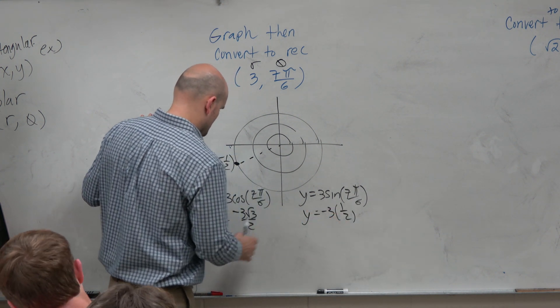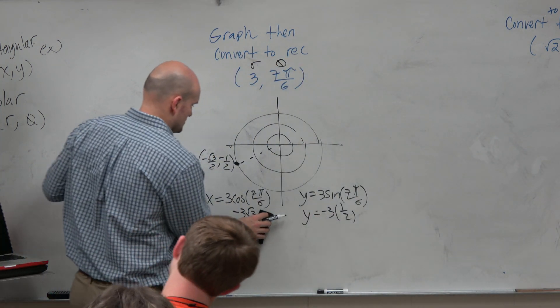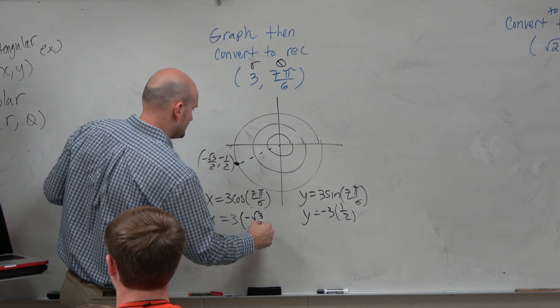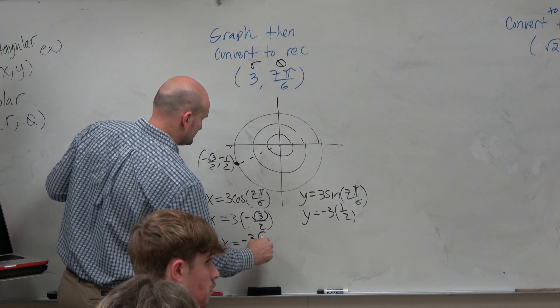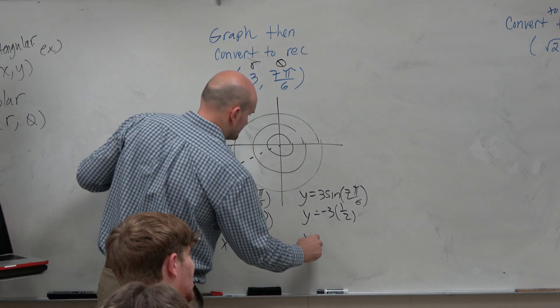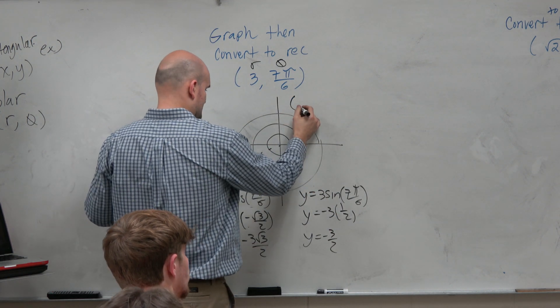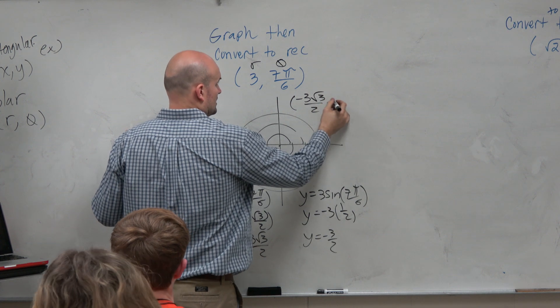I don't know why I didn't write it. Why don't I show my work one more time? So the point in terms of x and y components is negative 3 square root of 3 over 2, comma negative 3 halves.